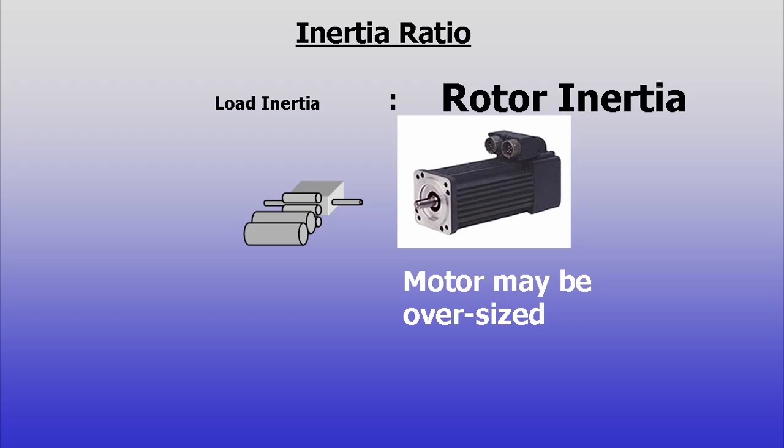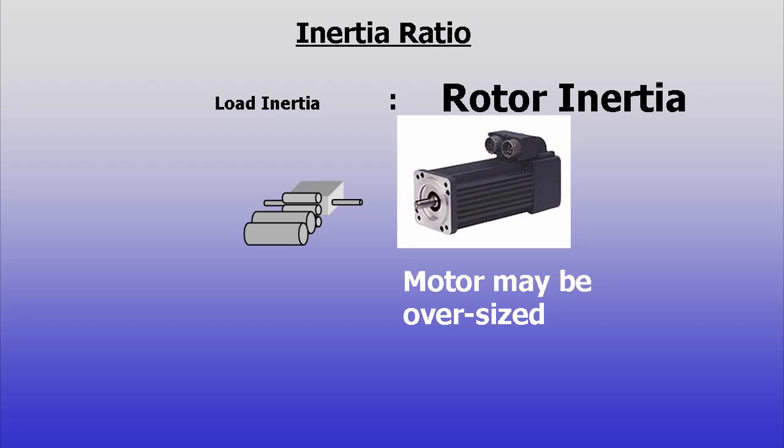Then, it's likely that a smaller motor could do the same job for less cost. Minimum inertia ratios can approach 1 to 1, but rarely need to be lower.